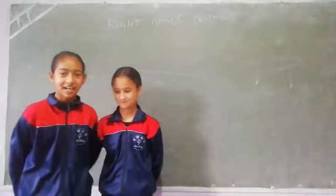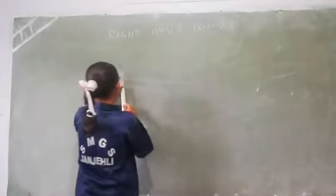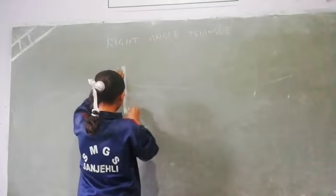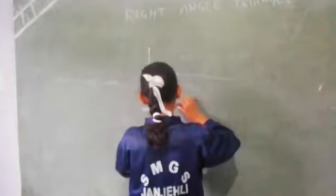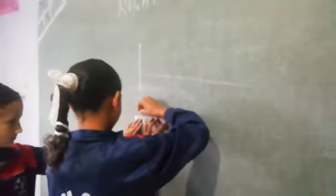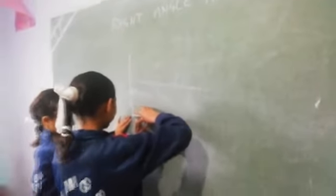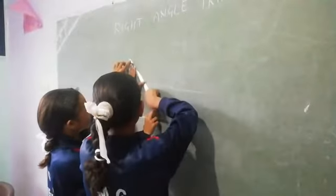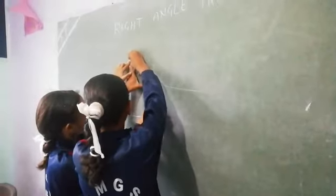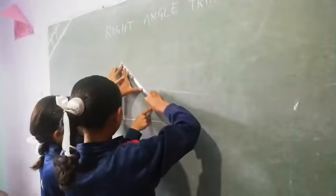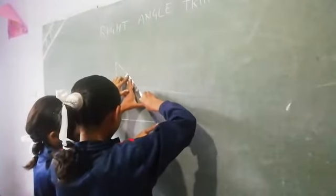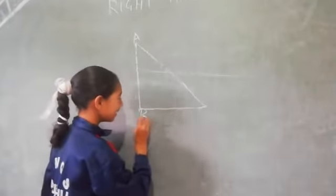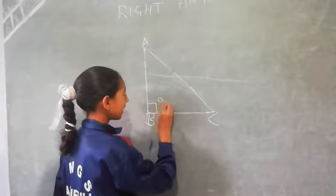So first let me draw a right angle triangle. A, B, C. This angle is 90 degrees.